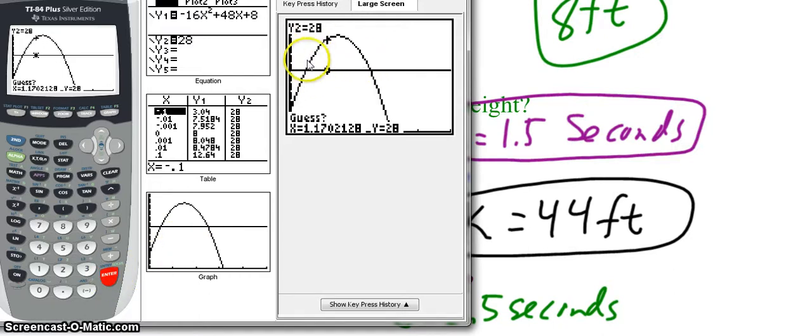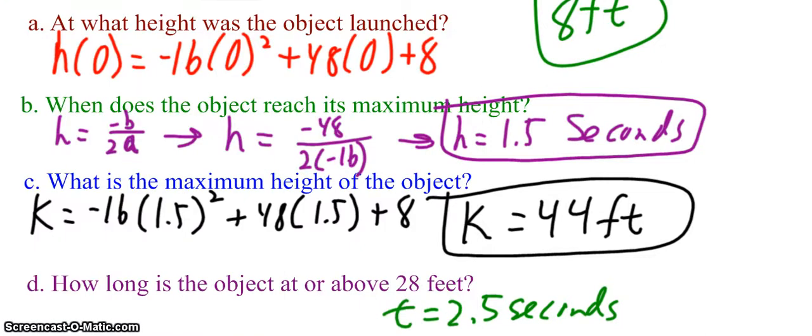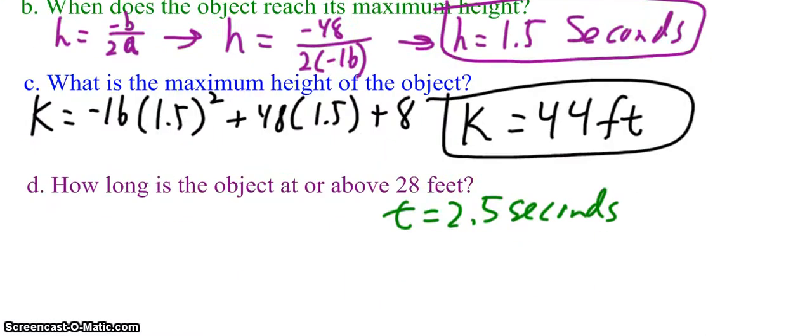The guess doesn't matter because I'm closer to this intersection now than I was to this one. So I can just hit enter again. And just to point out, if we didn't, we would go closer if we needed to. So I hit enter, and I can see that this is at 0.5 comma 28.